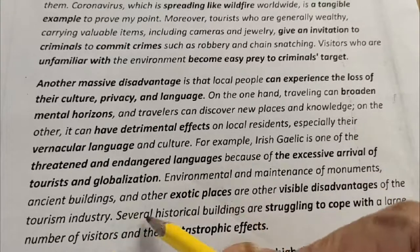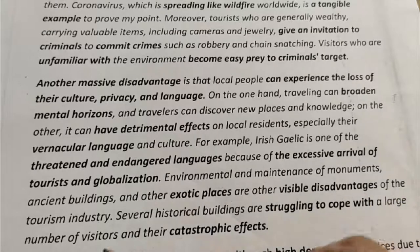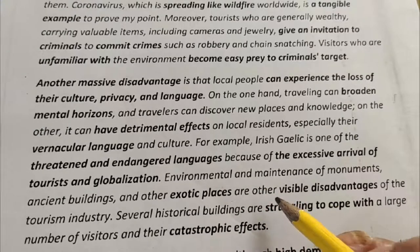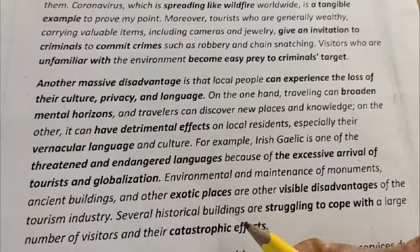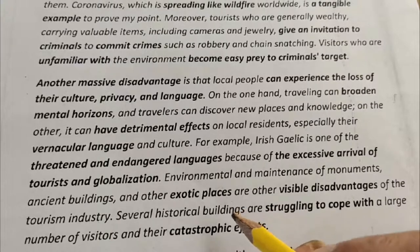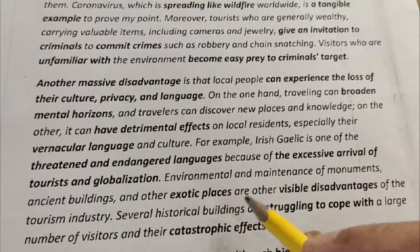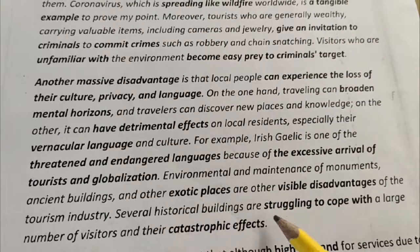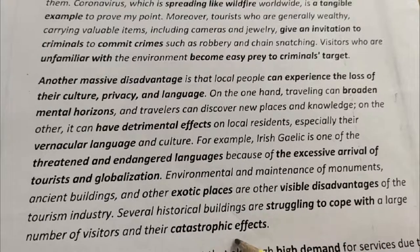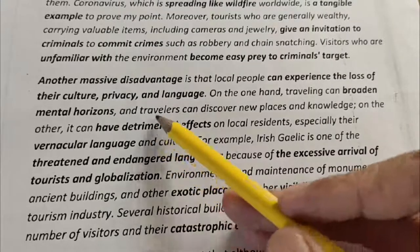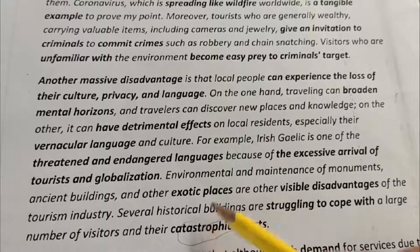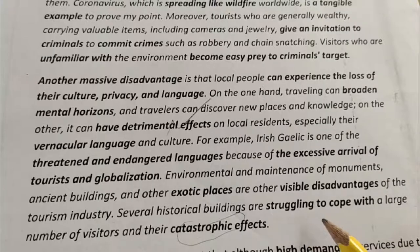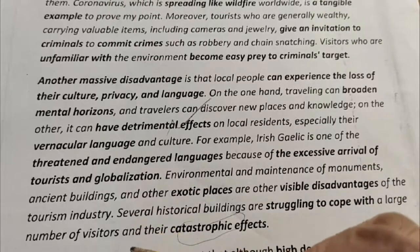Environmental impact and the maintenance of monuments, ancient buildings and other exotic places are other visible disadvantages of the tourism industry. 'Exotic places' means very beautiful places that are expensive to maintain. Several historical buildings are struggling to cope with a large number of visitors and their catastrophic effects. 'Catastrophic' is a synonym for 'detrimental' — both meaning negative effects. 'Struggling to cope with' means trying very hard to handle the large number of visitors and the issues they bring.